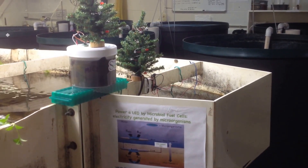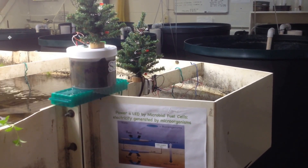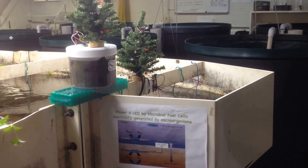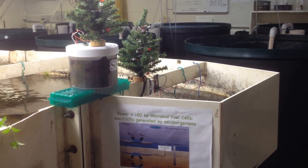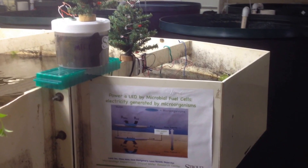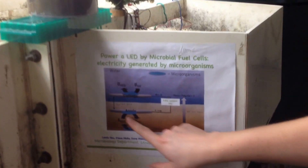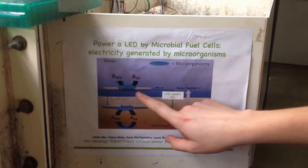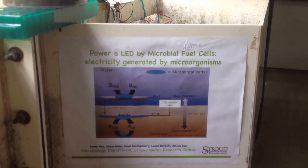Today we want to introduce you to our microbial fuel cells, which were built to capture power from microscopic organisms. The fuel cell is made up of two parts, the anode and the cathode, both of which are made of carbon cloth.